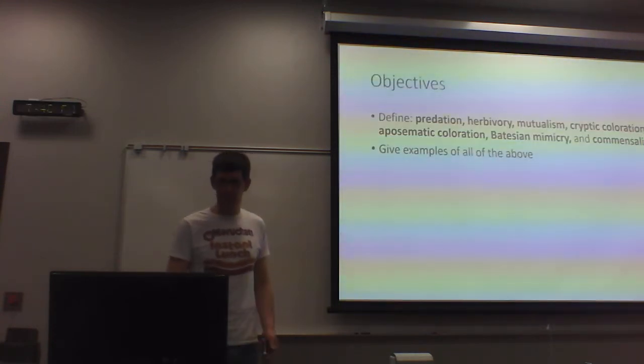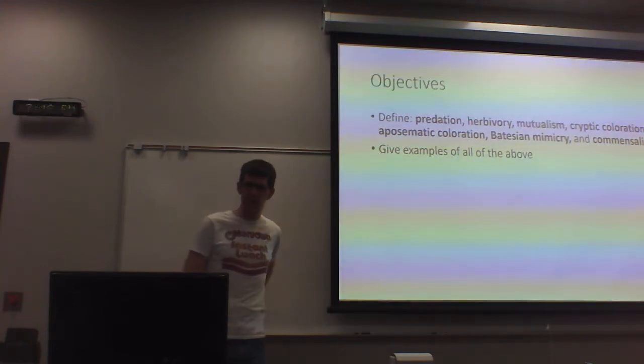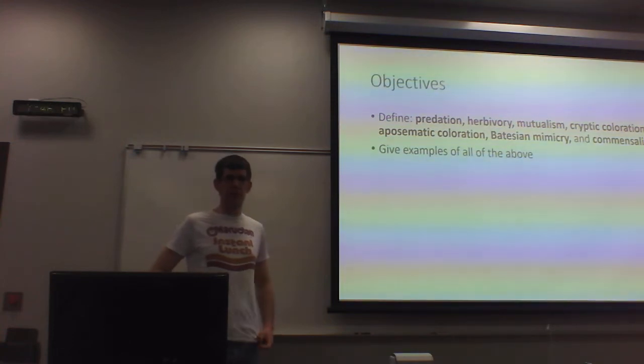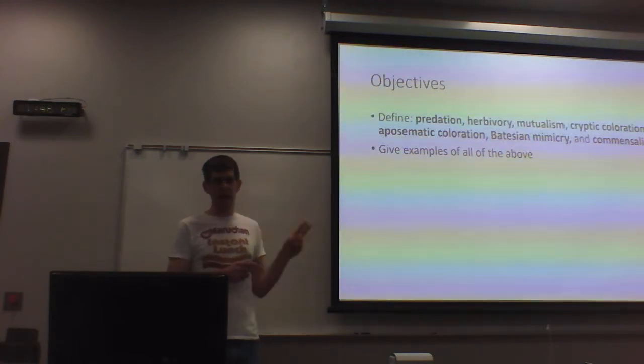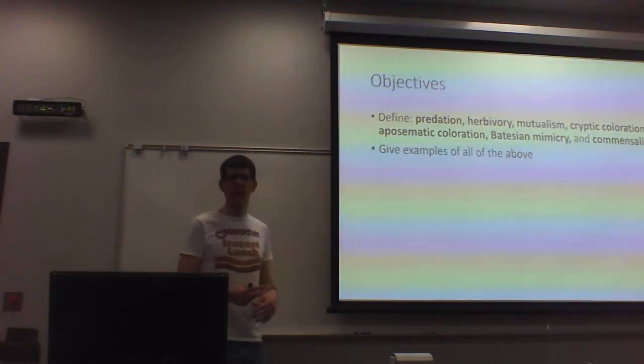Species interactions. Define predation, herbivory, mutualism. Do that on your worksheet, guys. Do it on your worksheet. Do it on your own some, lone some. We've already done it a bit this semester, so I'm not too worried about this. But here are the terms I want you to get: cryptic coloration, aposematic coloration, and Batesian mimicry. I want you to give examples of all of these. Watch some David Attenborough, guys. Watch Blue Planet, Planet Earth. Heck, watch Our Planet, Wild China, Wild Romania. Something like that.